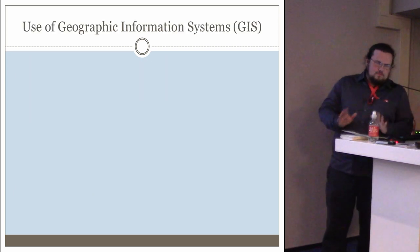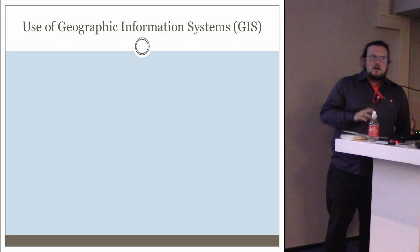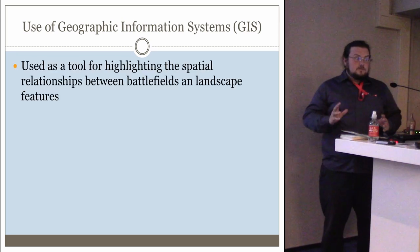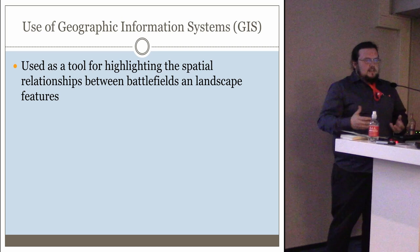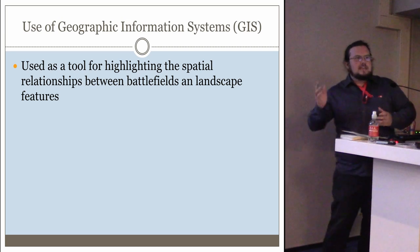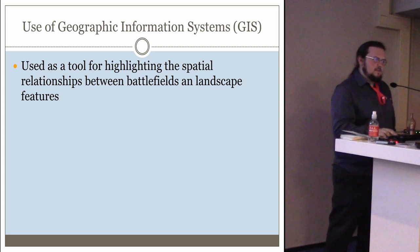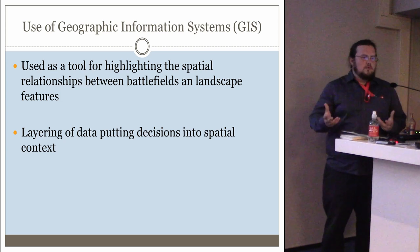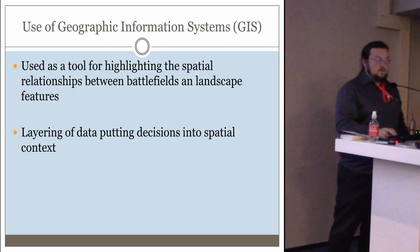A very brief outline of the toolset I'm using: Geographic Information Systems — GIS. I'm sure a lot of people in this room are relatively familiar, but to keep everyone on the same page, I'm using it as a tool for highlighting the spatial relationships between the battlefields and the landscape features. Once features within the landscape are identified, you can do spatial analyses — how far are you from a given feature, can you see a given feature, can you see one feature from another — all of this can be done within the GIS space by layering data on top of each other, contextualizing data with additional data to answer questions.